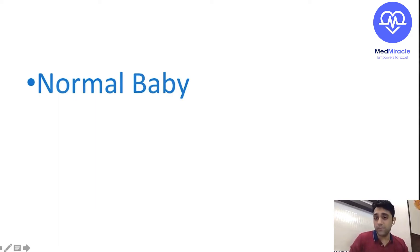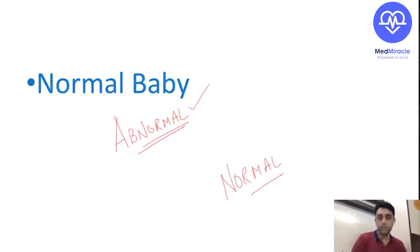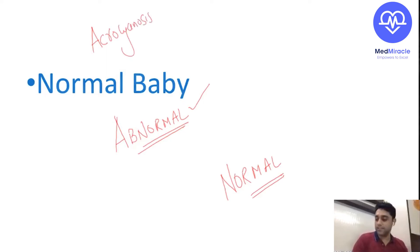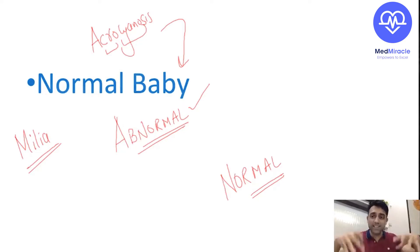Conditions in a newborn which look abnormal but are normal — these are important image-based and recent exam questions. One example is acrocyanosis — 'acro' means periphery, 'cyanosis' means blue discoloration — a condition in a newborn which looks abnormal but is normal. Another is milia, where keratin gets deposited beneath the skin. Now, the first important pediatric dermatological image I want to show: what is this picture? What are these rashes?